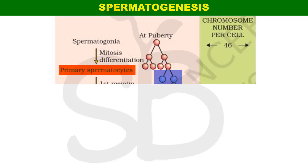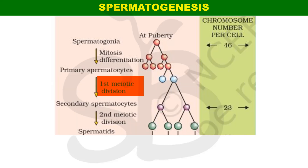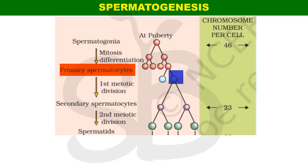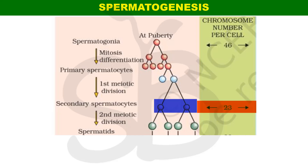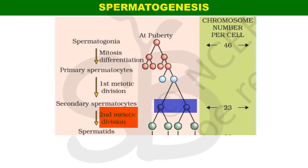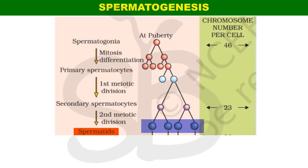The primary spermatocytes are in a diploid condition. Through meiosis I, they undergo reduction division. The secondary spermatocytes formed are in a haploid condition with 23 chromosomes. These secondary spermatocytes then undergo equational division (meiosis II), forming four haploid cells. The chromosome number remains 23 in these secondary spermatocytes.